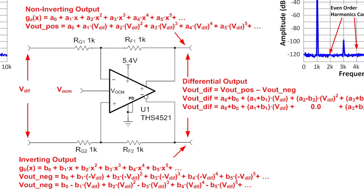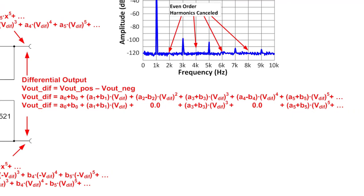For these functions, x is the differential input signal. Notice that for the bottom signal, the polarity of the differential input is negative because it is inverted by the amplifier. The negative sign on the VDIF signal cancels out for even harmonics like x squared and x to the fourth power, whereas the negative sign is not affected for odd harmonics, x cubed and x to the fifth power. The differential output subtracts the inverting signal from the non-inverting signal. Assuming that the polynomial coefficients for both paths are equal, the even terms will cancel out, and only odd harmonics will remain.